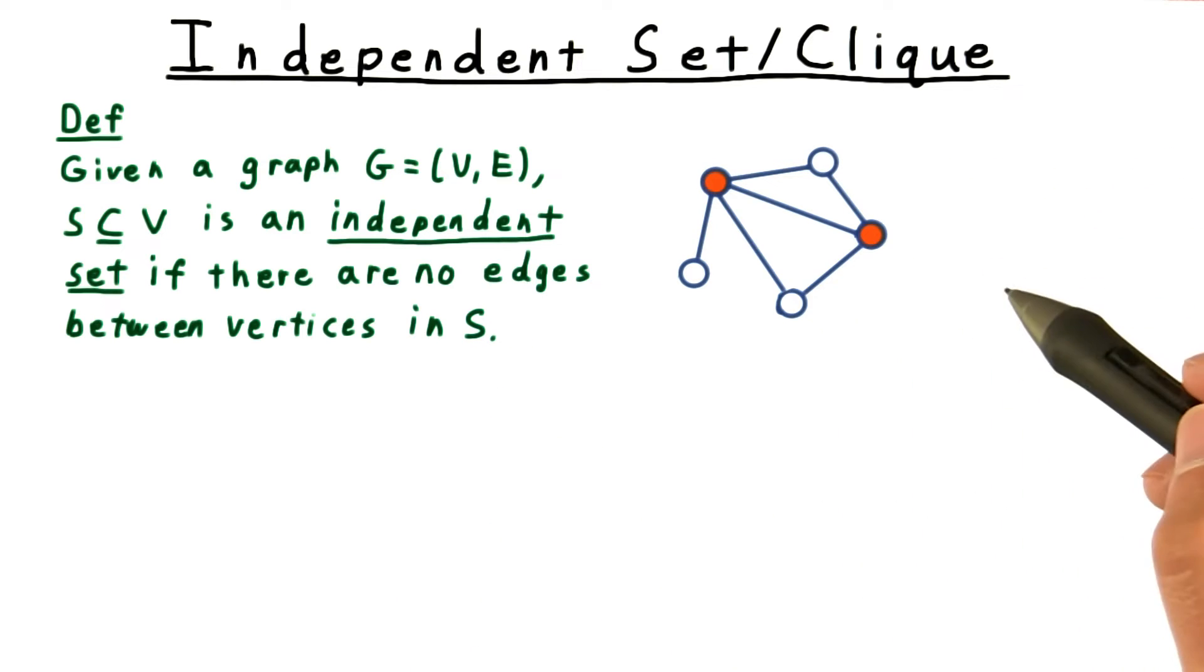For example, these two vertices here do not form an independent set because there's an edge between them. However, these three vertices do form an independent set because there are no edges between them.